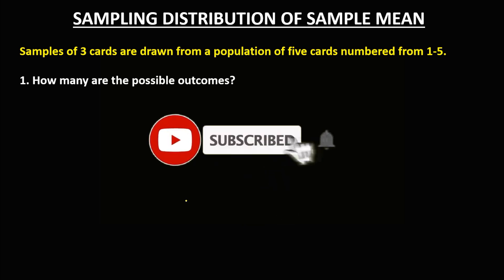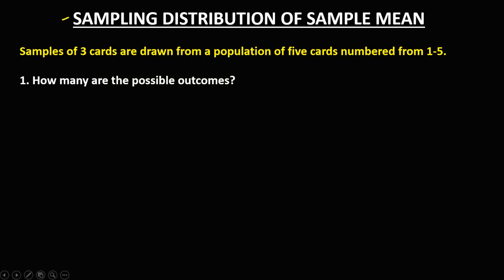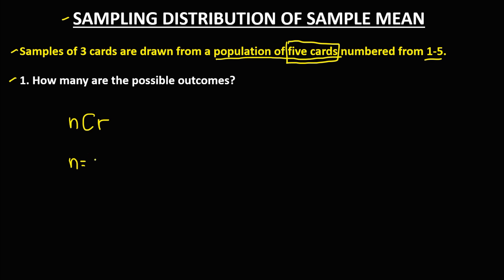Welcome to MathStorya. Today's topic is the sampling distribution of sample mean. We have this problem: samples of 3 cards are drawn from a population of 5 cards numbered 1 to 5. How many are the possible outcomes? To solve this, we're going to use the formula N choose R, where N is the population size. Since we have a population of 5 cards, N is equal to 5. And R is the sample size.